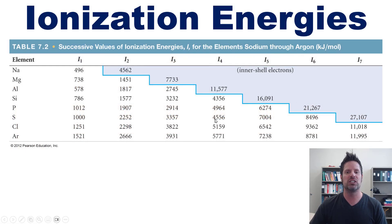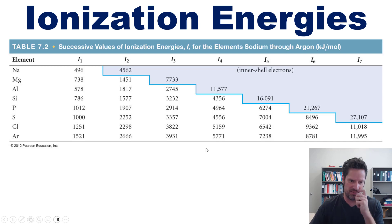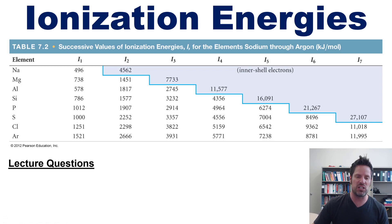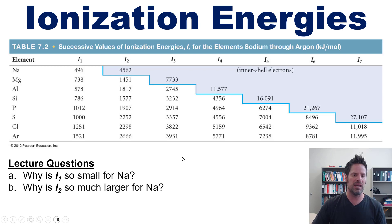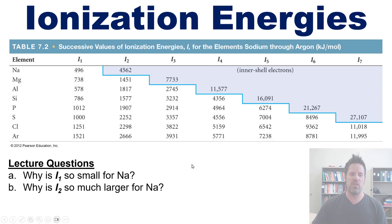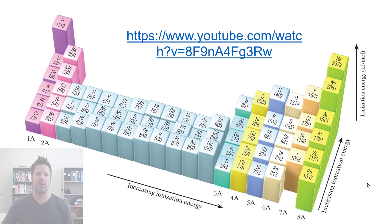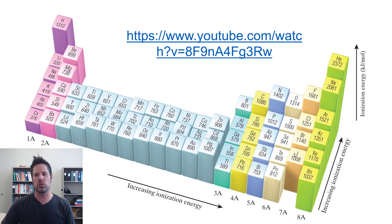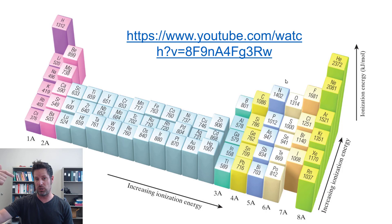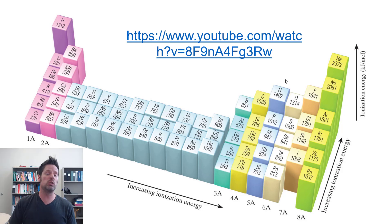This table from our text shows the same pattern. Here's a lecture question to try on your own: why is the first ionization energy for sodium so small, and why is the second one so large? Also, using the periodic table, arrange the following atoms in order of increasing first ionization energy. A linked YouTube video also showcases this trend beautifully.